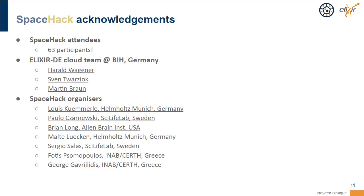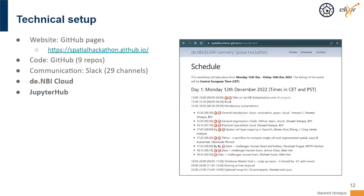In terms of the technical setup for this hackathon, a lot of the things we use are fairly standard. We set up a website using GitHub Pages, and all of the organizers were part of this GitHub setup so anyone could change the material — we had a nice timetable with links to talks. We managed the code via GitHub, with nine repositories for different types of projects. We did the day-to-day communication on Slack, ending up with 29 channels, with around 10 primarily being used.